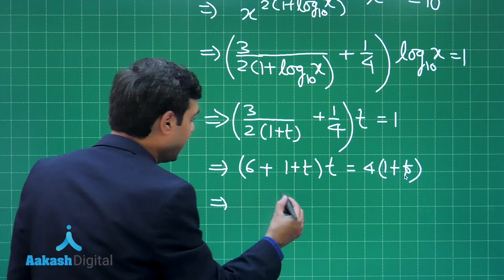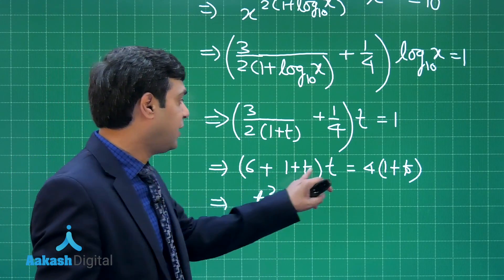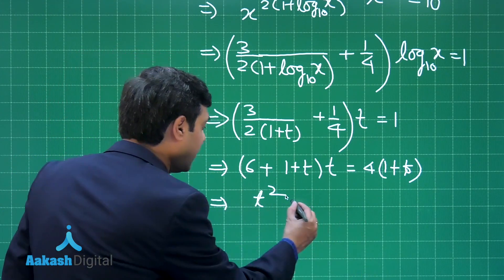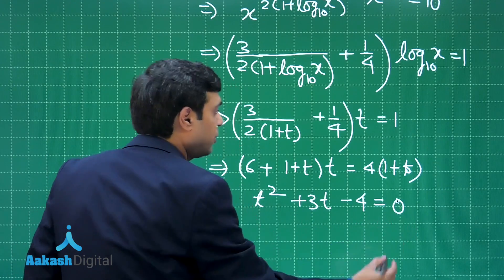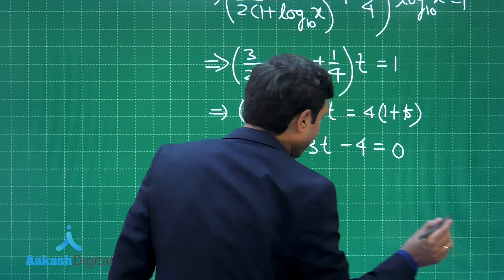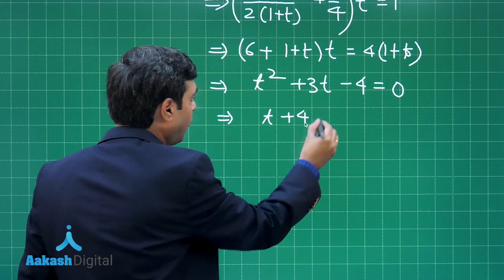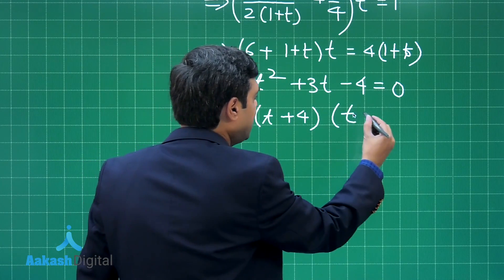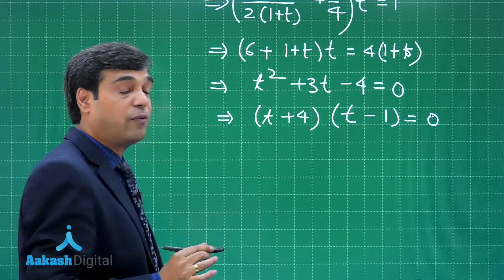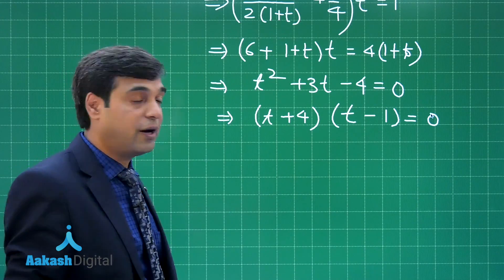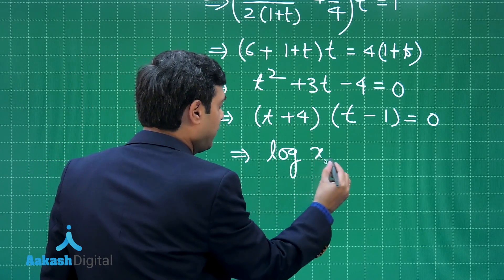Simplifying to get the final result, we are getting t² + 7t minus 4t, that is t² + 3t minus 4 equals 0. Factorizing it we get (t + 4)(t − 1) = 0, giving us the value for t as 1 or minus 4. That means log x to the base 10 is 1 or minus 4.